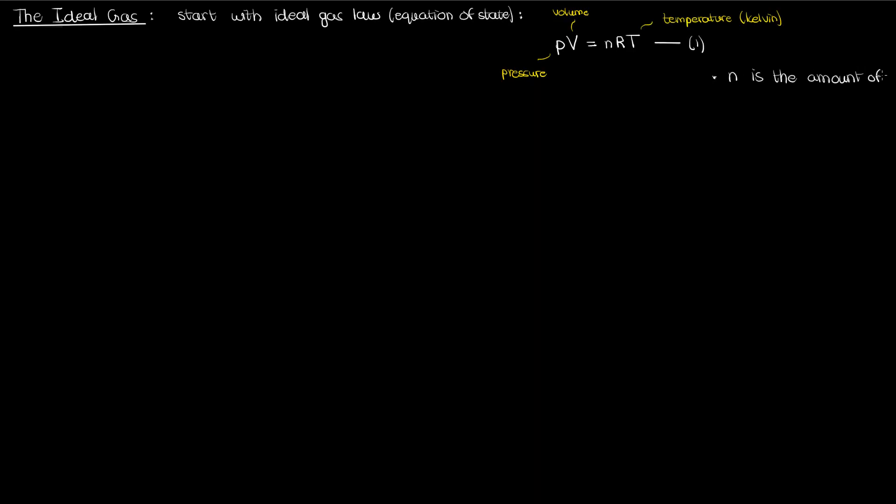Note that n here represents the amount of the gas in moles. Recall that a mole of a substance is the amount of that substance which contains an Avogadro's number of its molecules. Avogadro's number, or N sub A, is around 6.023 times 10 to the 23. So a mole of carbon dioxide, for instance, is 6.023 times 10 to the 23 CO2 molecules.